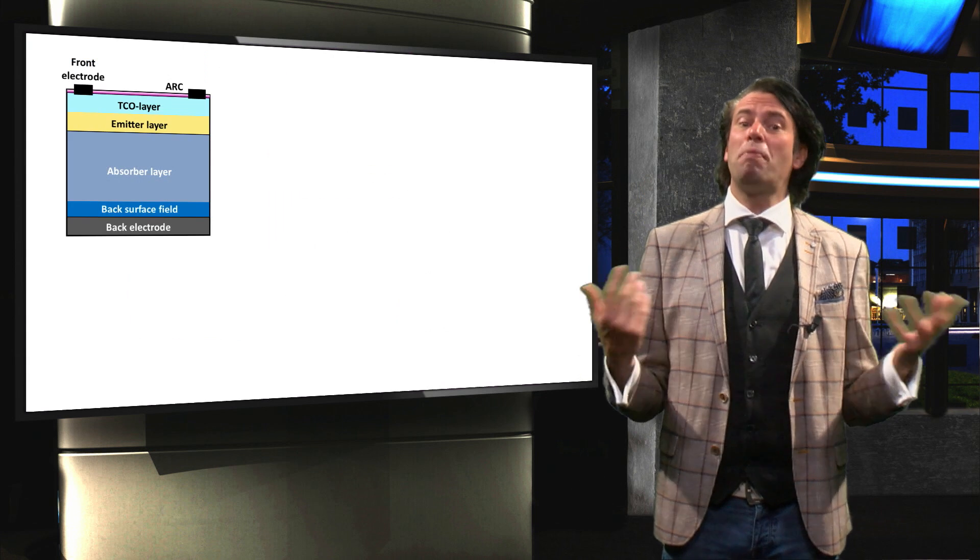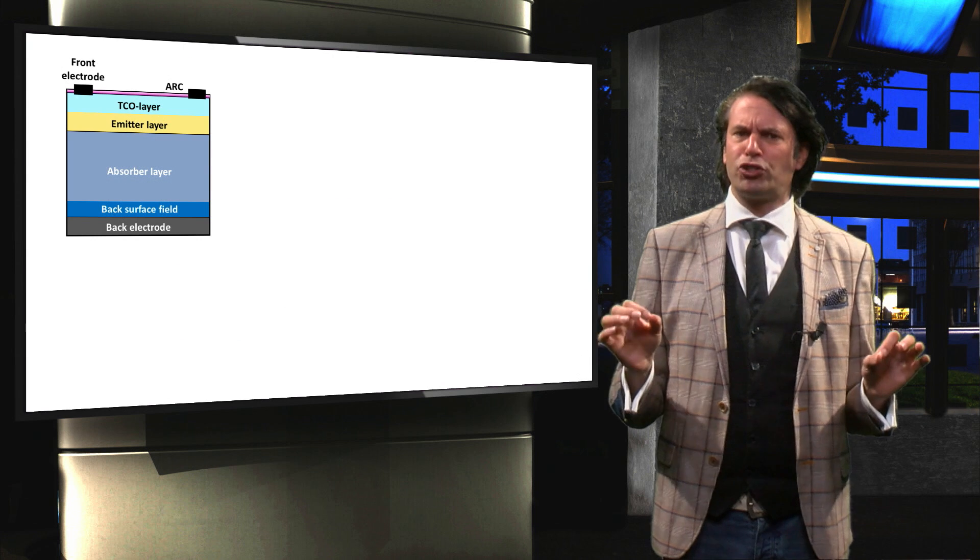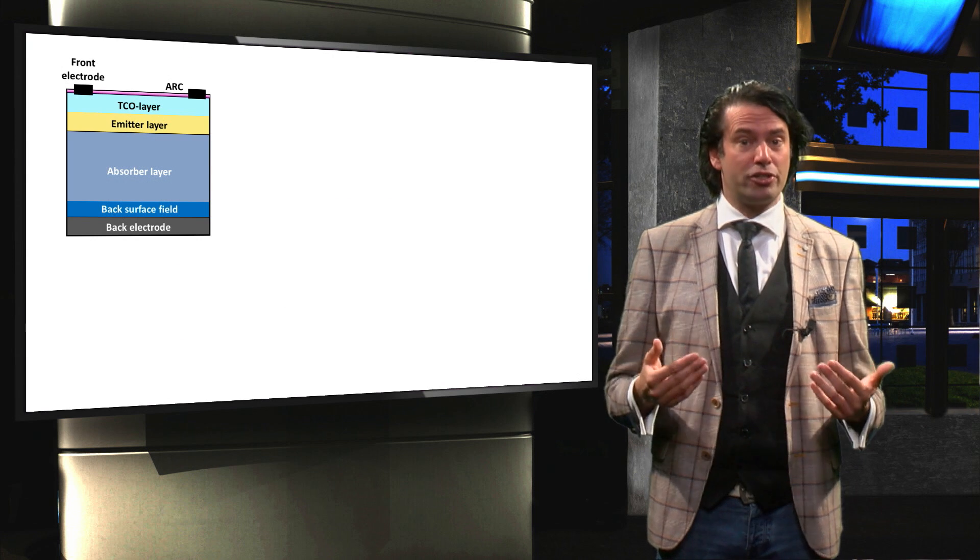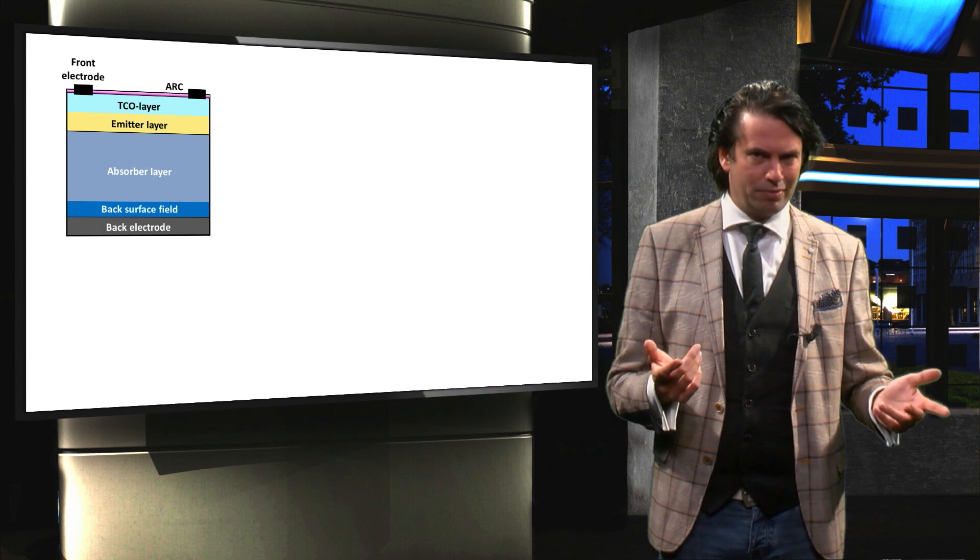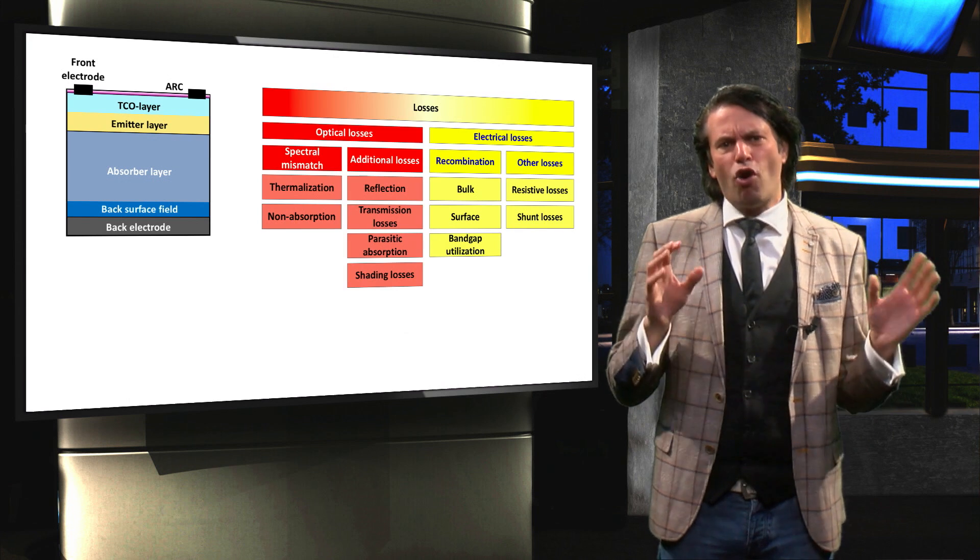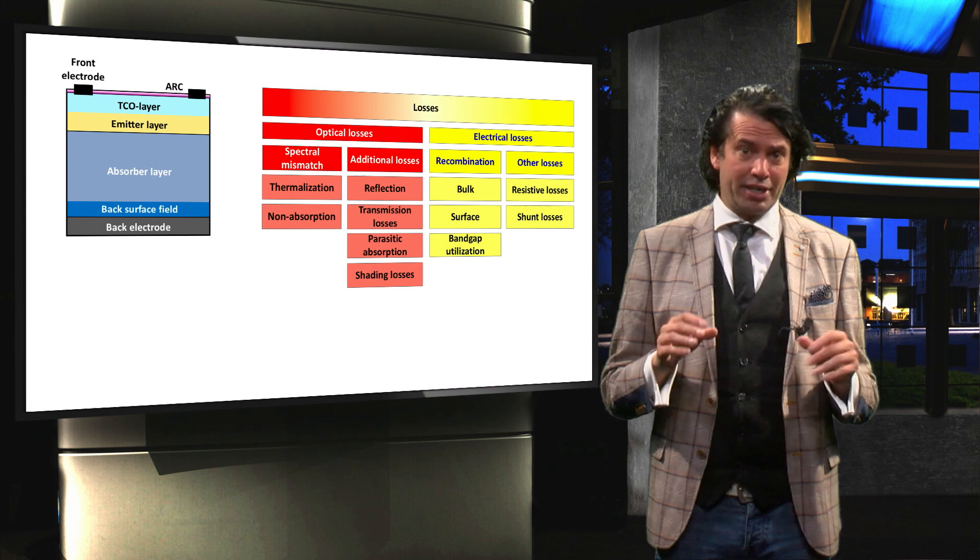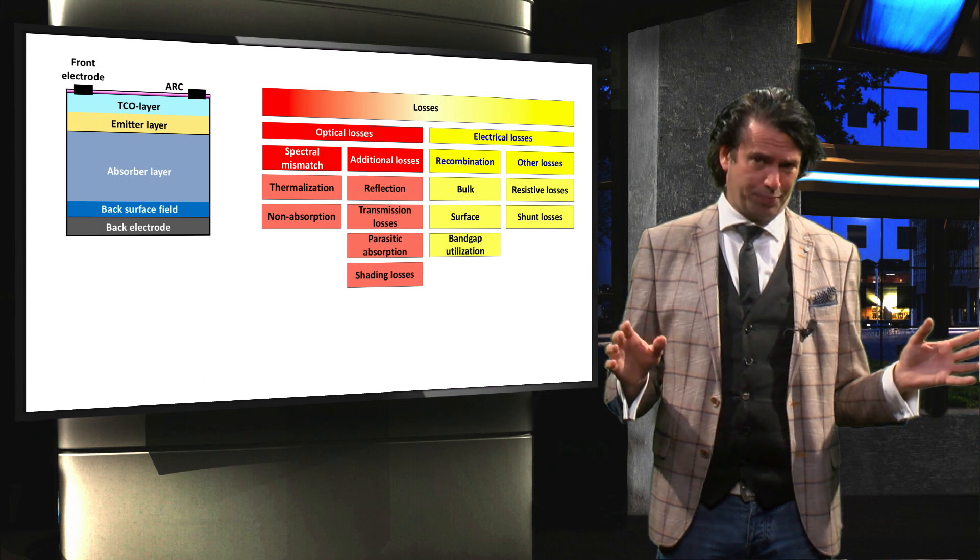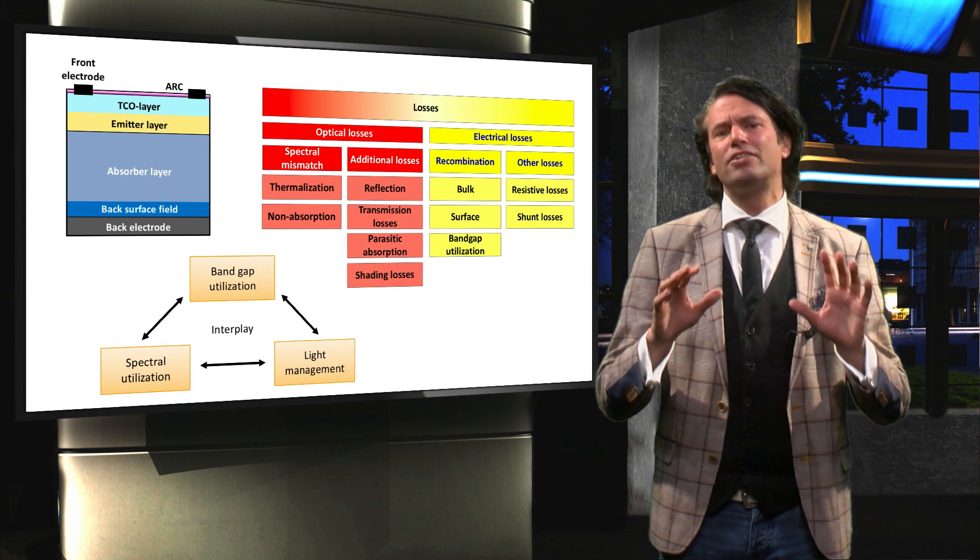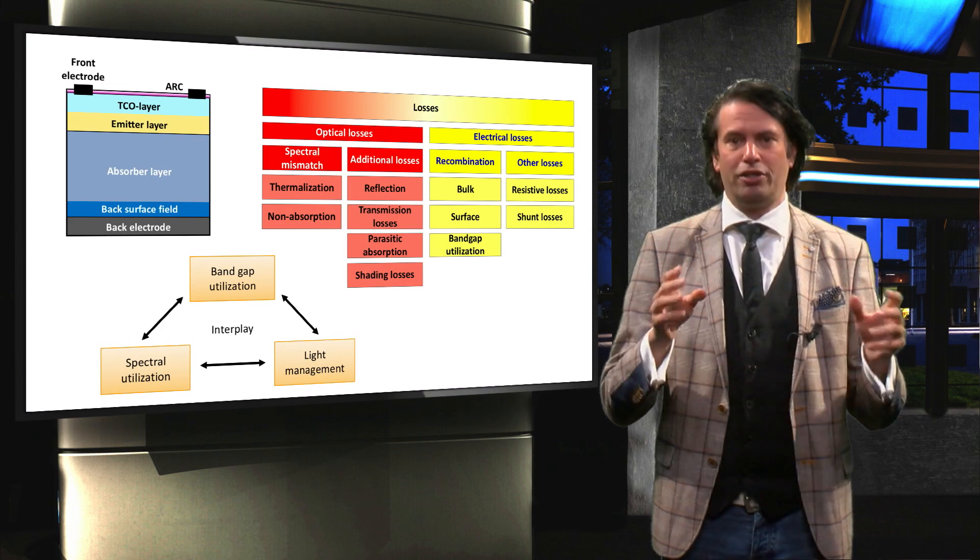In summary, in this two-part video we discussed the basic function of each of the layers in a standard crystalline silicon solar cell. We looked at an overview of all the optical and electrical loss mechanisms that occur in any type of solar cell. Finally we derived from these the universal solar cell design rules.